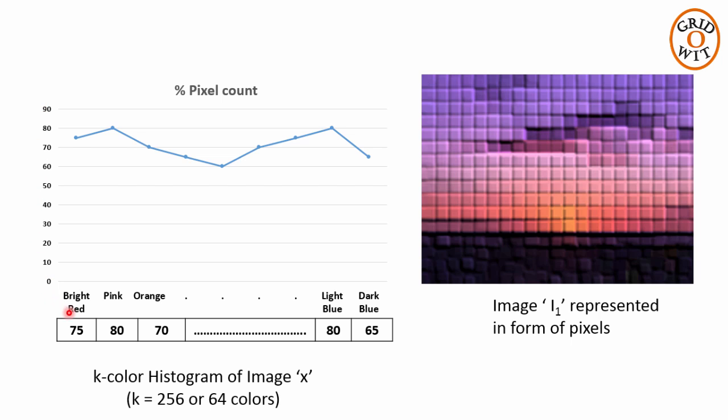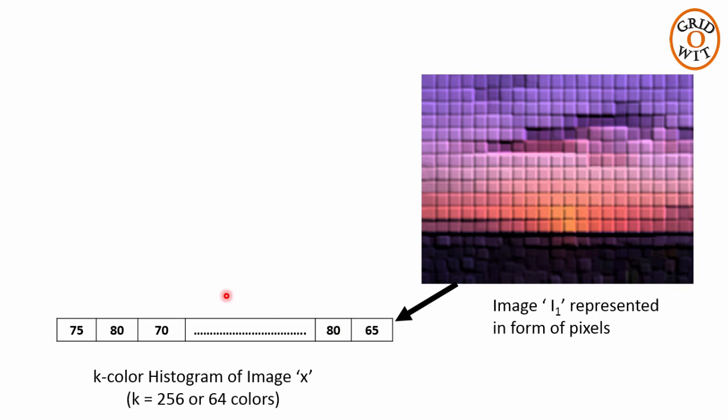I have taken some dummy values to explain this point. For example 75% of the pixels in this image are bright red colors, 80% are pink color, 80% are light blue color and so on. Through this histogram we have got a vector of 256 colors. And these values are nothing but the color feature of this image.